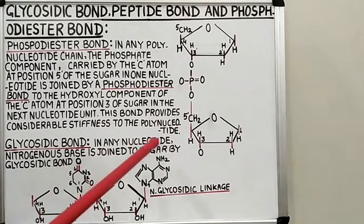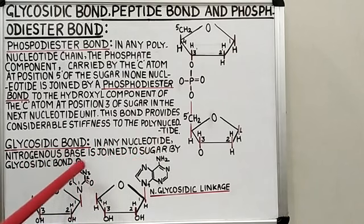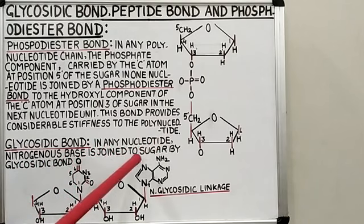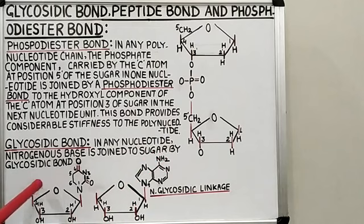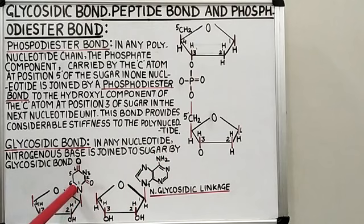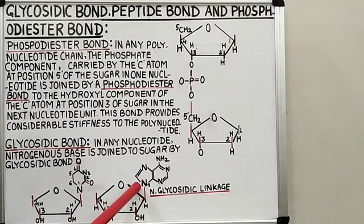In any nucleotide, the nitrogenous base is joined to the sugar by a glycosidic bond. The glycosidic bond develops between the first carbon of the sugar and nitrogen at position 1 in the case of a pyrimidine base, and at position 9 in the case of a purine base.